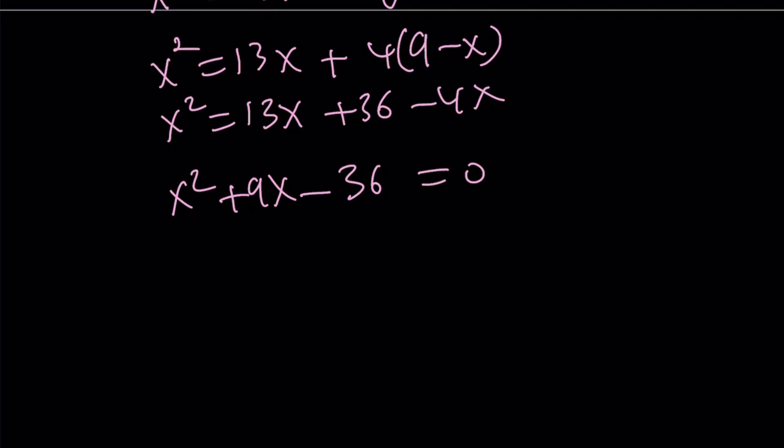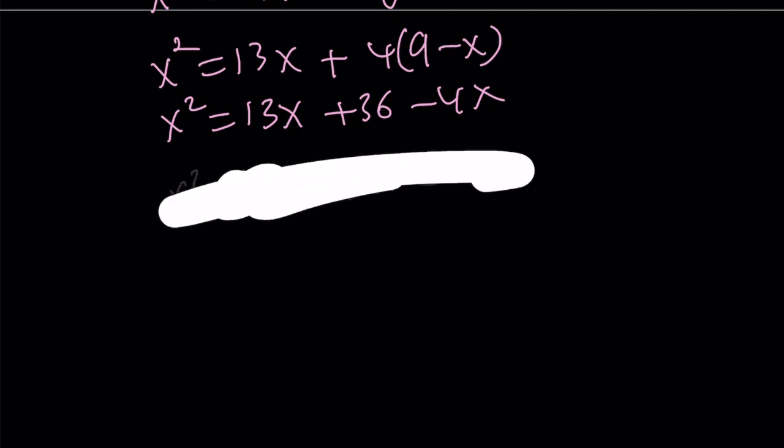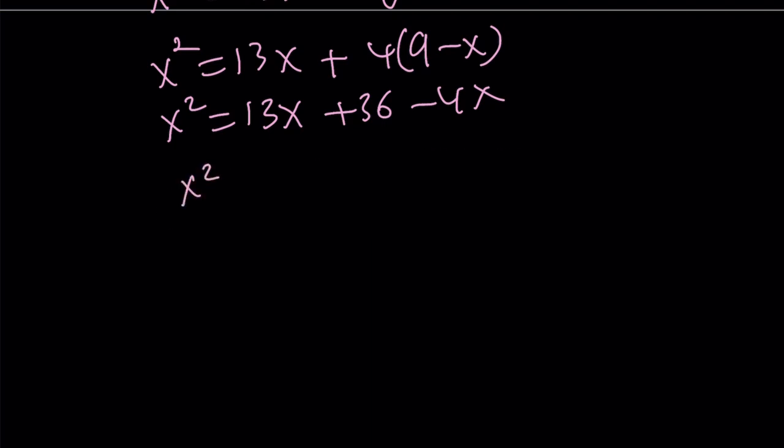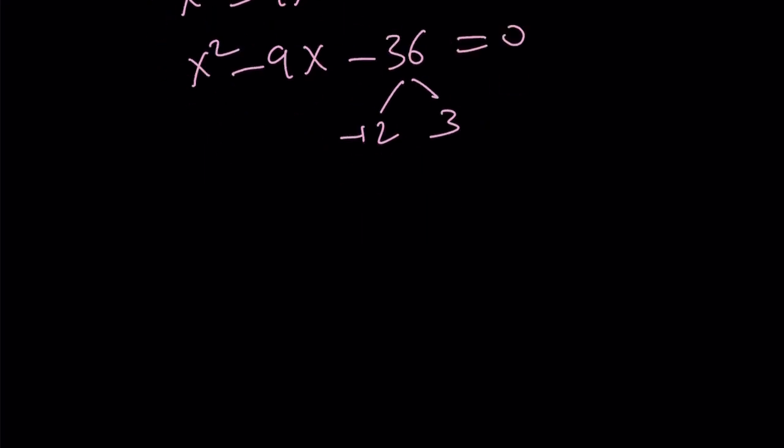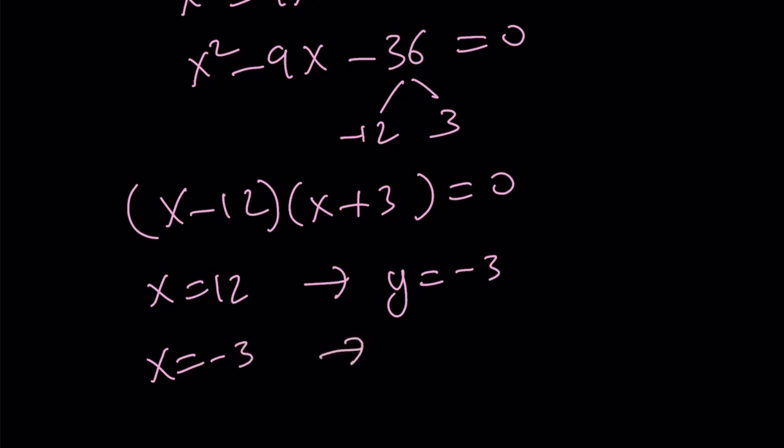It should be negative 9x because I'm bringing the x. Let me do the following. x squared equals 9x plus 36. I skipped that step and I confused myself. So it should be like this. And now I'm looking for two numbers. Negative 12 and 3 are the numbers I'm looking for. To keep a long story short, x minus 12 and x plus 3 equals 0. And guess what? From here we get x equals 12. Since their sum is 9, y is negative 3. Or x equals negative 3 and their sum is 9. So y is equal to 12.